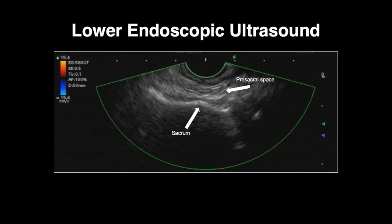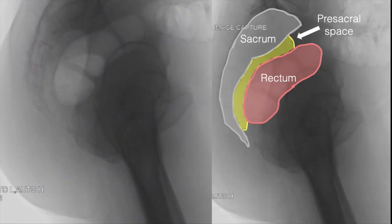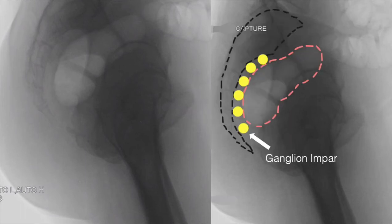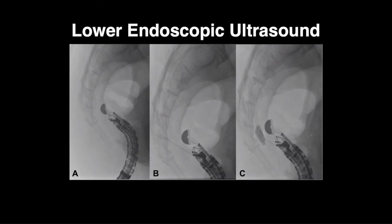Visualized here are the sacrum, which is a deep hypoechoic structure, and the pre-sacral space, which is the hypoechoic overlying superficial structure. The pre-sacral space represents the location of the ganglion impar. During the procedure, fluoroscopy is performed with the patient in the left lateral decubitus position. The overlying cartoon represents the anatomic structures of interest including the rectum, pre-sacral space, sacrum, and coccyx. The spinal efferent sympathetic trunk courses through the pre-sacral space, and the ganglion impar is the first efferent ganglion innervating pelvic structures.